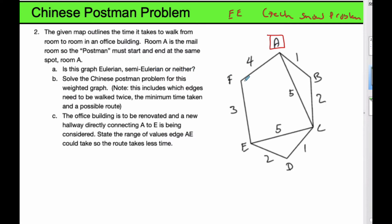If we look at this, we count up all the vertices, the degree of each of the vertices. This is 2, this one's 3, 2, 4, 2, and 3. And so because there are 2 odd degrees, it is semi-Eulerian.